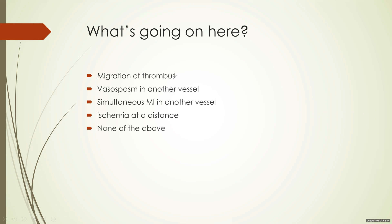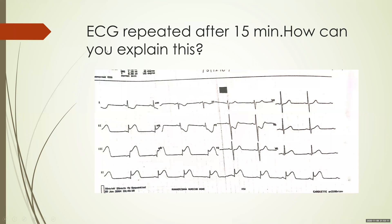Vasospasm in another vessel — yes, can occur. Simultaneous MI in another vessel — okay, can occur; it's rare, but plaque ruptures have been described in multiple vessels at the same time, so it is possible but rare. Ischemia at a distance is again a possibility — occlusion in one artery causing ischemic changes in another artery. But there is a far more common and logical option for this kind of case.